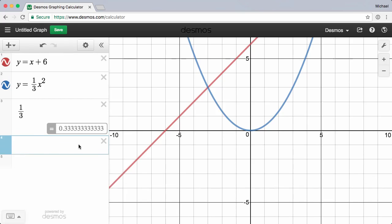To identify points of interest like x and y intercepts, or points of intersection, simply tap or click and Desmos will reveal the coordinates.